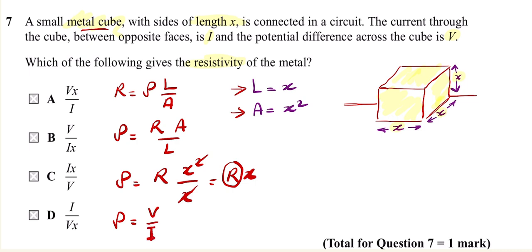So ρ now as resistivity is V x over I. The correct answer is A.